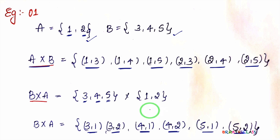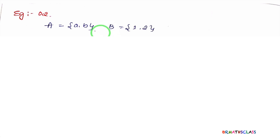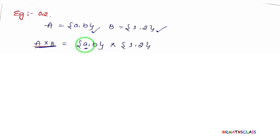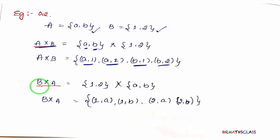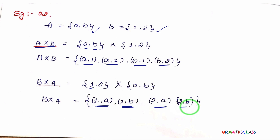Let's understand with another example. Set A is {a, b} and set B is {1, 2}. To calculate A cross B, take element a and pair with all elements of set B: ordered pairs a comma 1 and a comma 2. Then take element b: ordered pairs b comma 1 and b comma 2. For B cross A, take element 1 and pair with set A: ordered pairs 1 comma a, 1 comma b, then 2 comma a, 2 comma b.